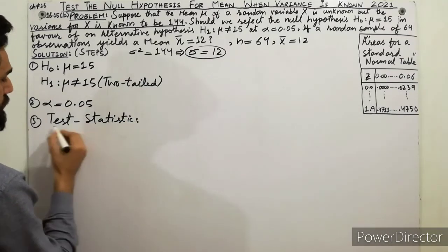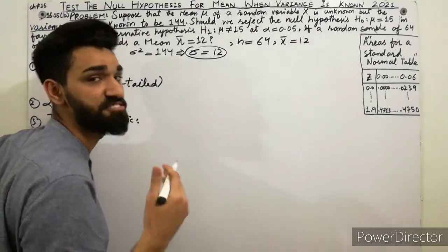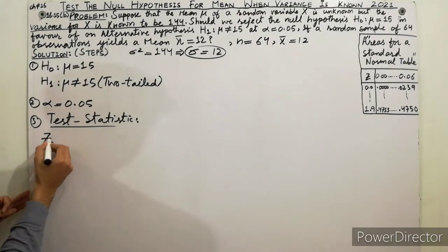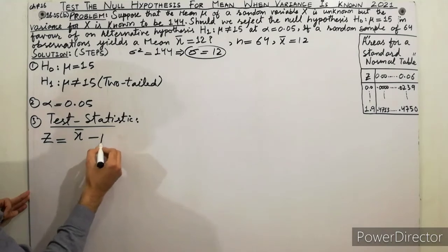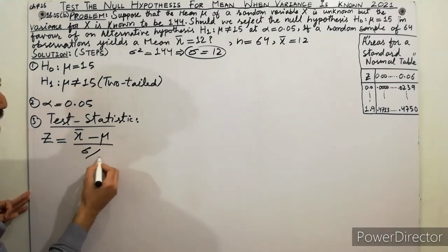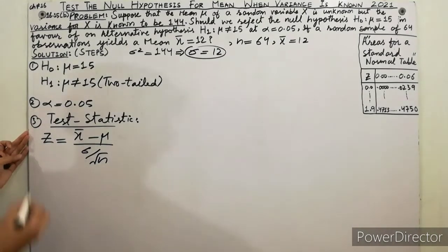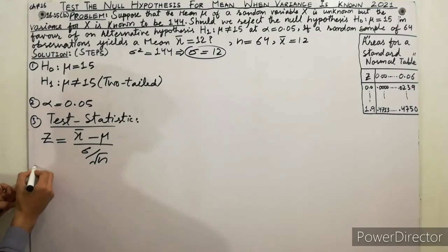Step three is the test statistic. Because in this case variance is already known, this is the first case. We will use the formula: z equals x-bar minus mu, divided by sigma over the square root of n.